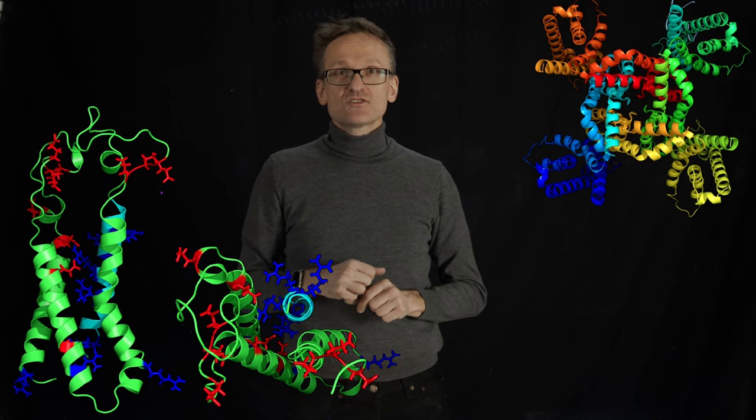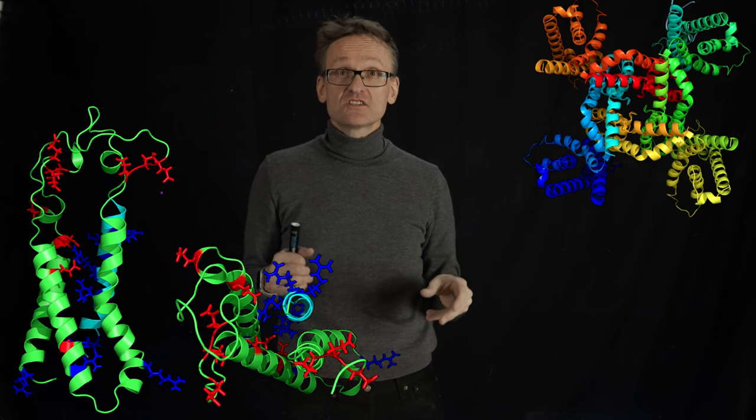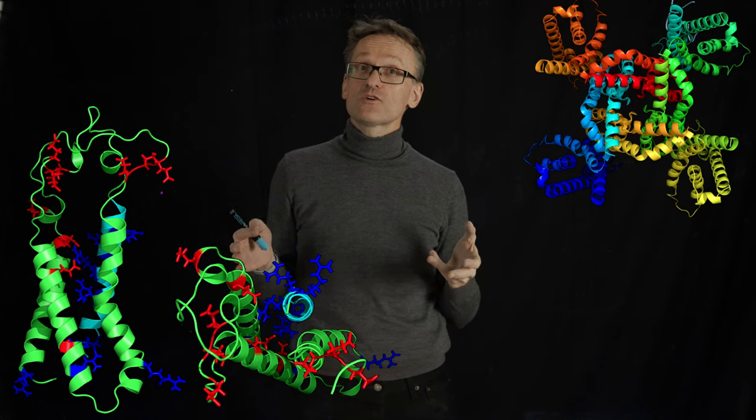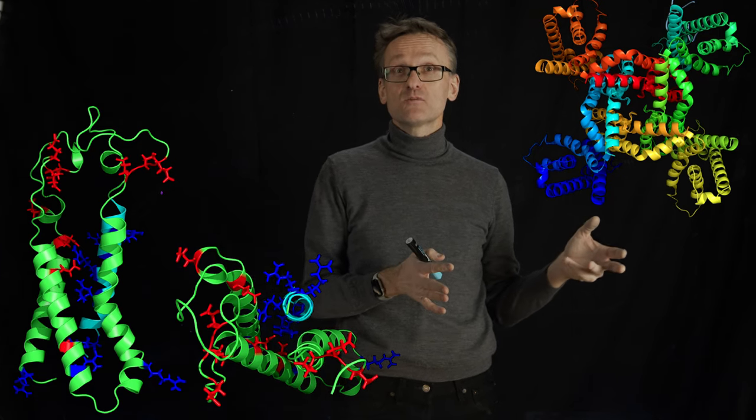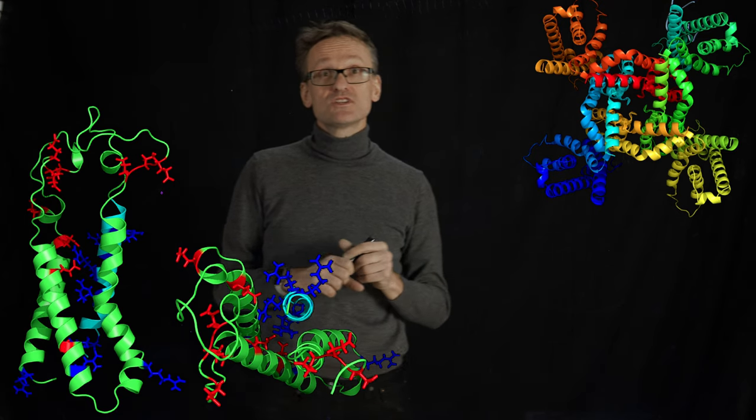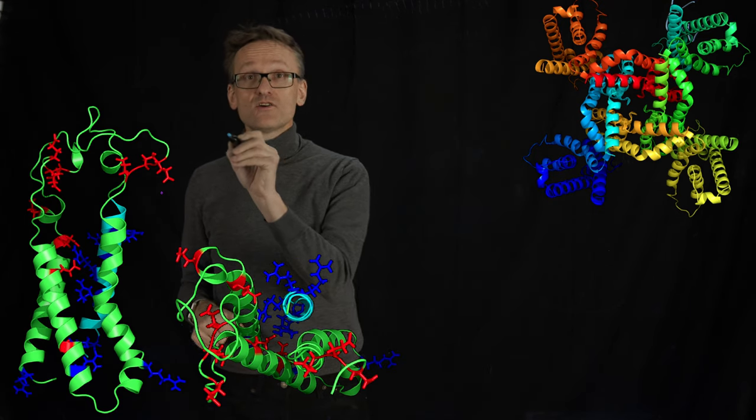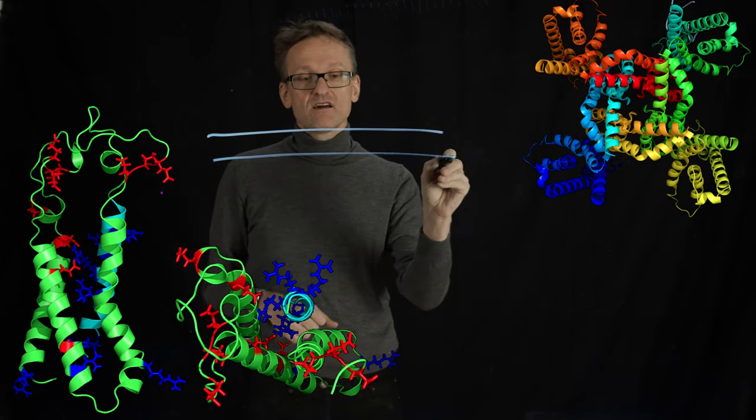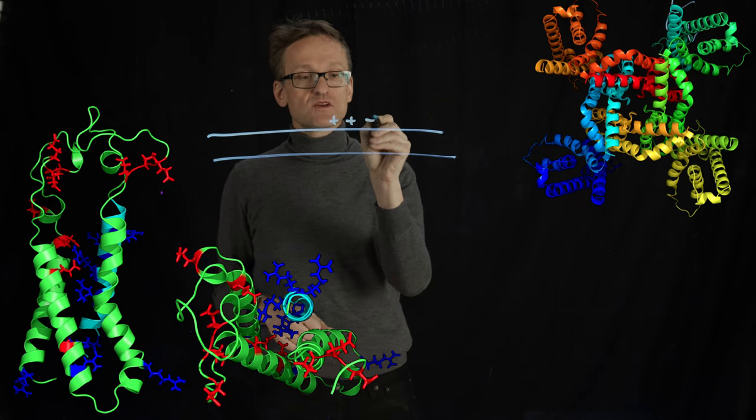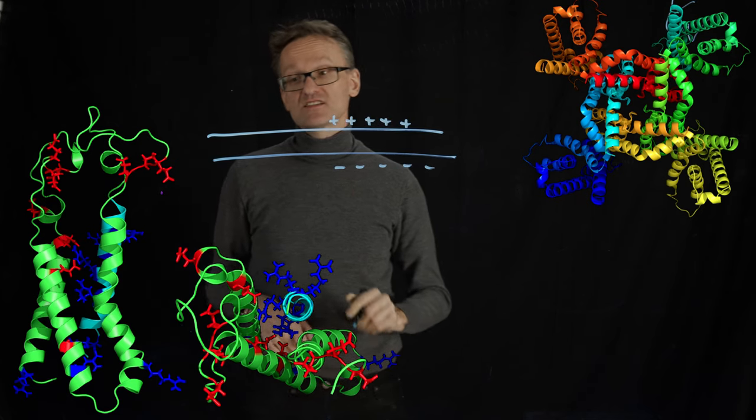When those ions are let through, that will change the potential across the bilayer. And in fact, I'm now going to neutralize the cell a little bit further. This leads to a chain effect. If I draw a nervous cell here, normally I have plus, plus, plus, plus, plus on the outside, and then minus, minus, minus, minus on the inside. But something happens here that I'm getting a neutralization.